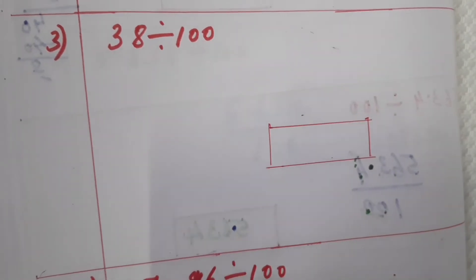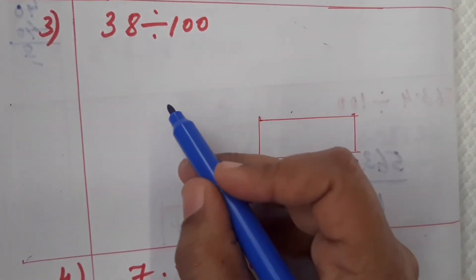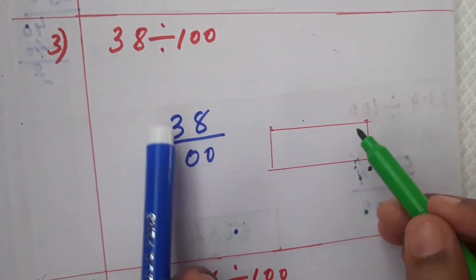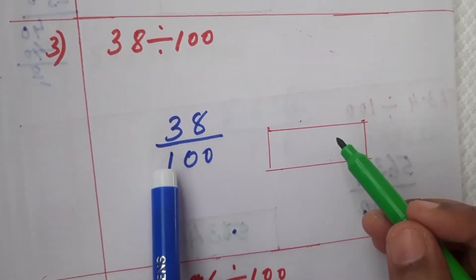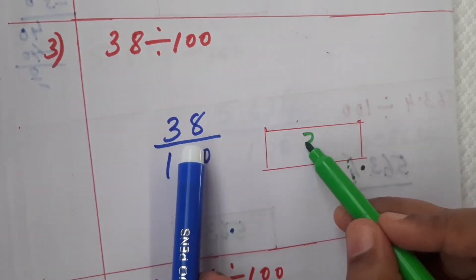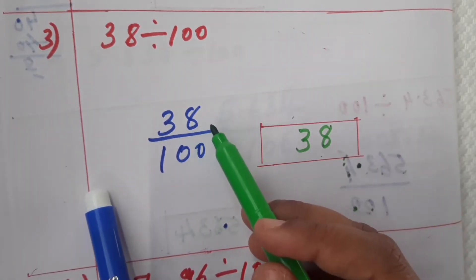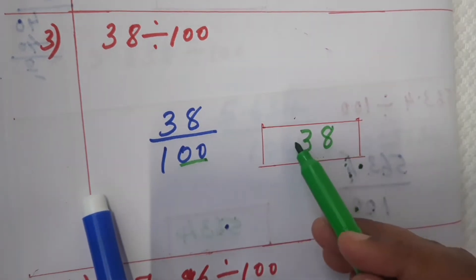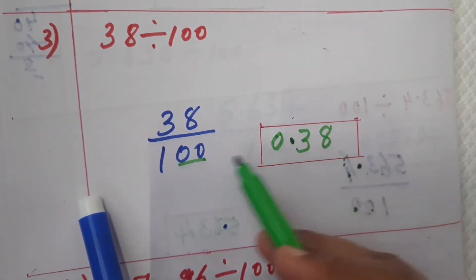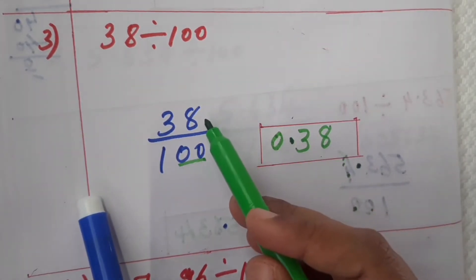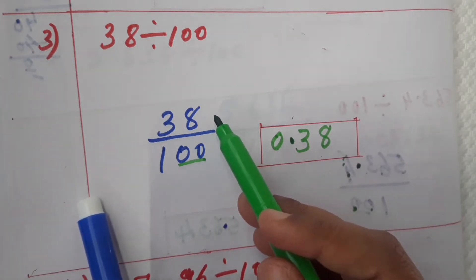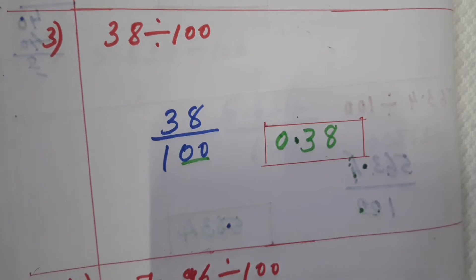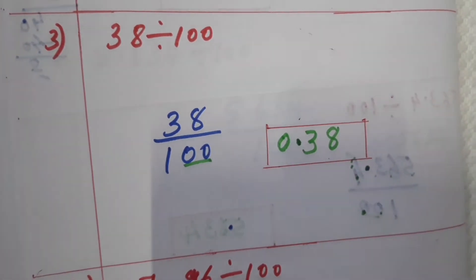Now the next question: 38 divided by 100. Write it as a fraction, numerator 38 divided by 100. We can write the answer directly. There is no decimal point in the numerator, so count the zeros in the denominator — two zeros. After two digits from the right, place the decimal point. The answer is 0.38.